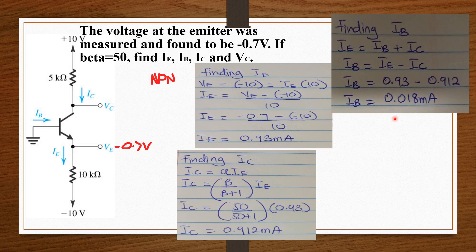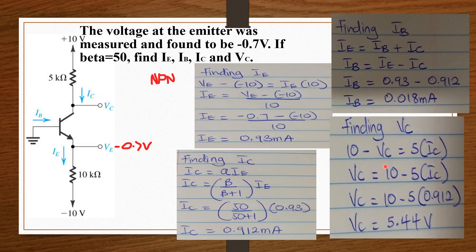The last thing to find is VC. We know IC, the resistor is 5 kilo ohms, and the supply voltage is 10 volts. So: 10 minus VC equals IC times 5. Making VC the subject: VC equals 10 minus 5 times IC. Inputting our values, VC equals 5.44 volts.